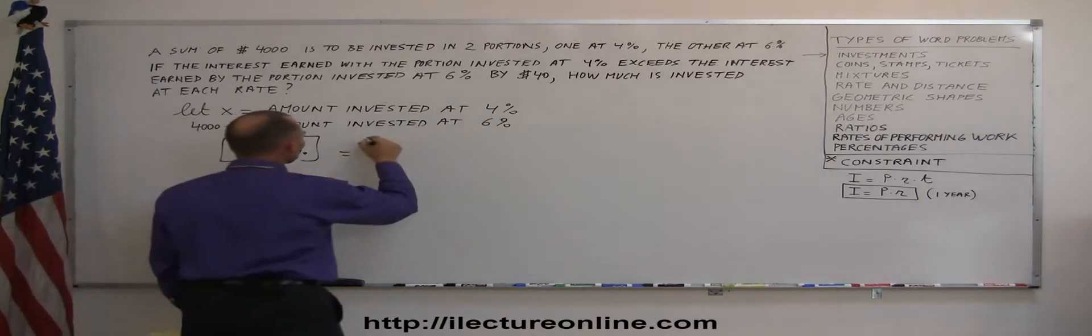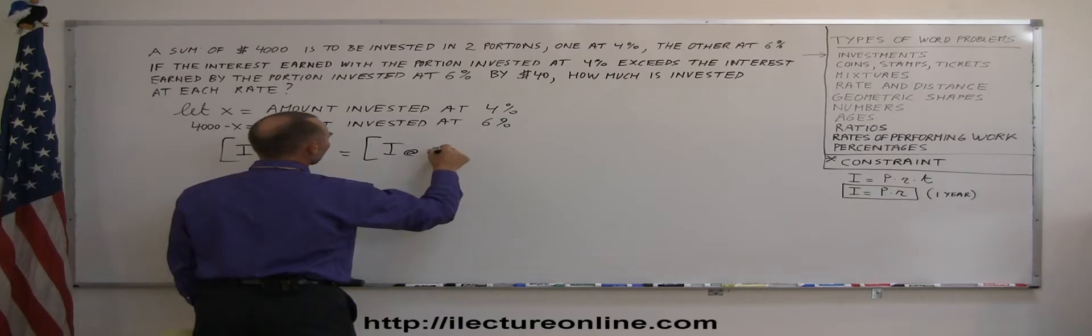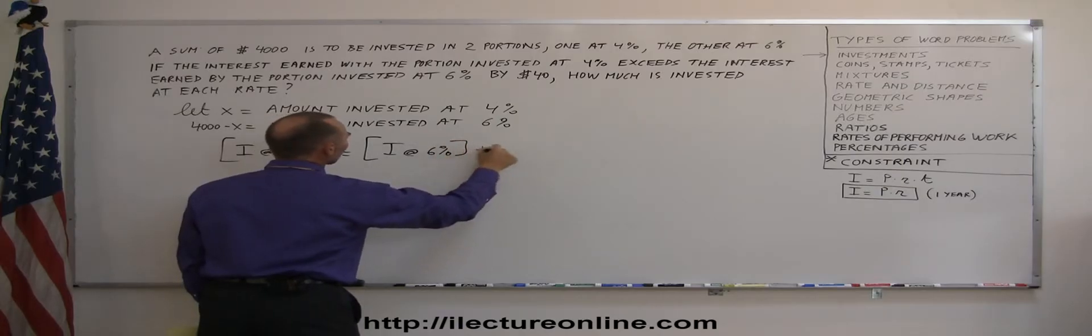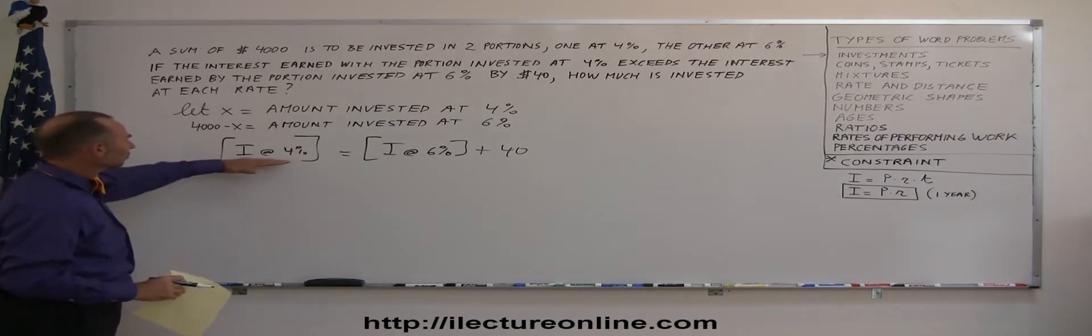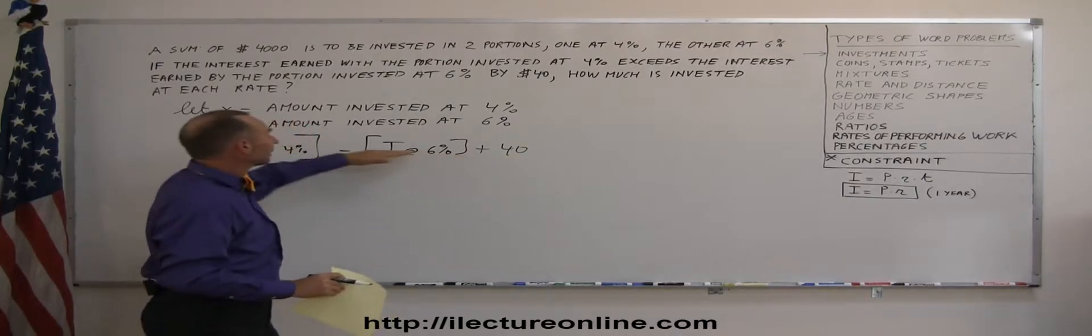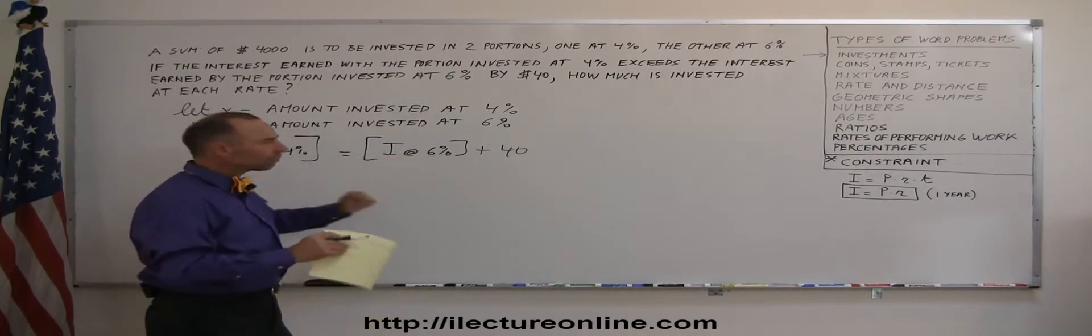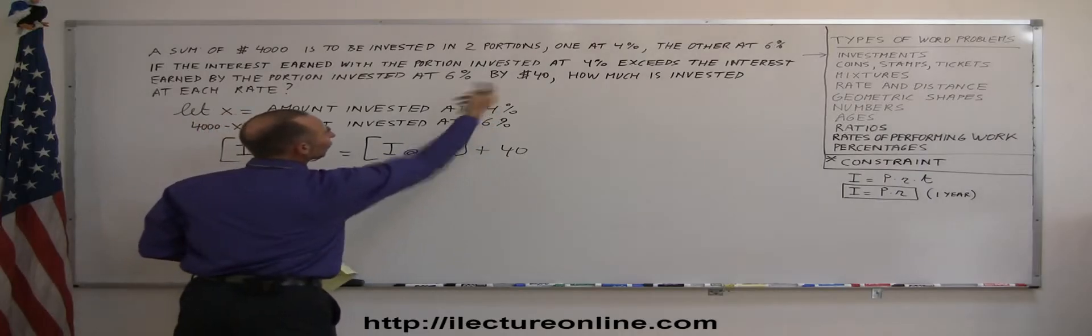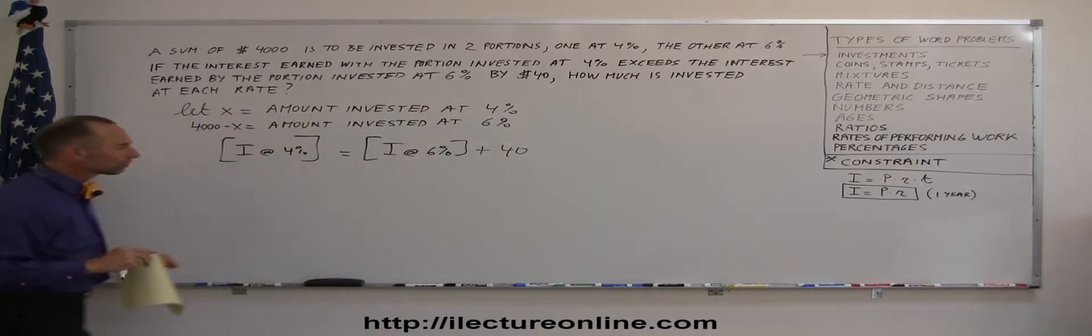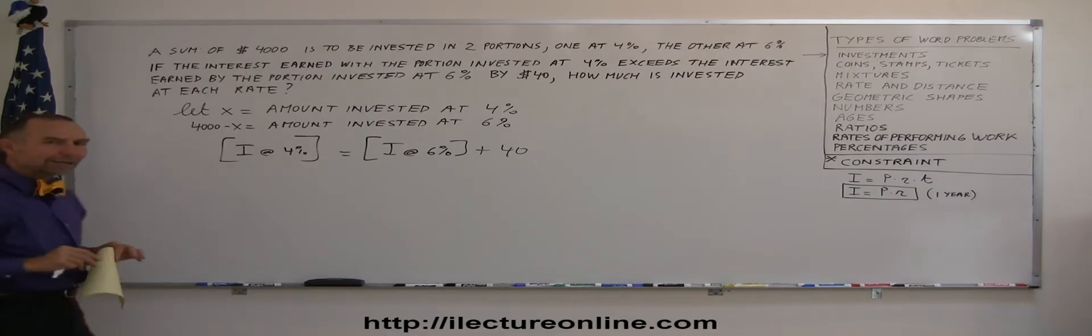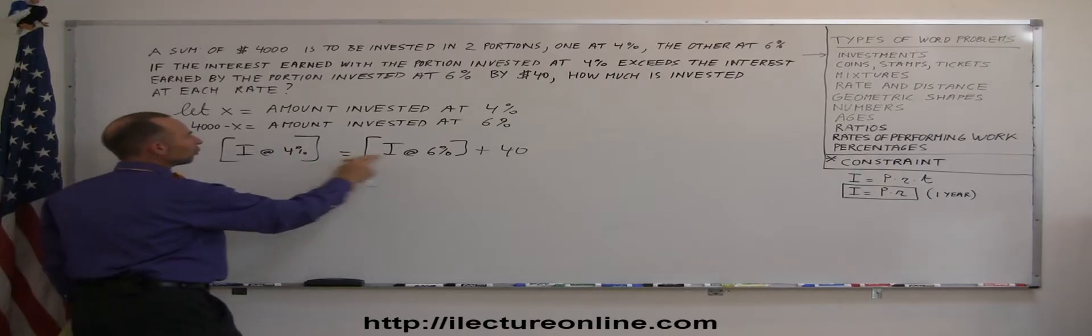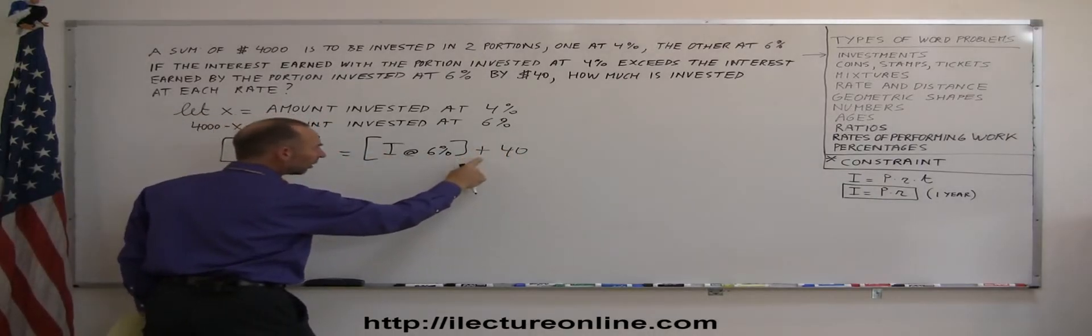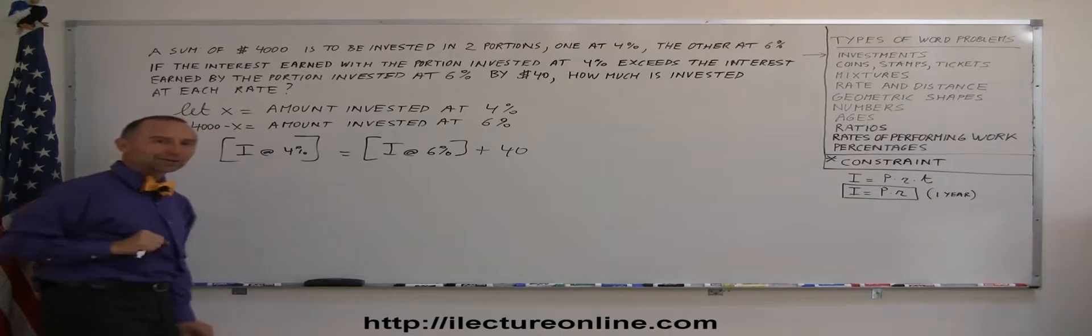So, it's equal to the interest earned at 6% plus $40. There's my constraint. You can see that the interest earned at 4% is $40 more than the interest earned at 6%. You have to put it into an equation, and notice that this is kind of reversed from what we wrote in the English language. And that's kind of the way we write it in mathematics.